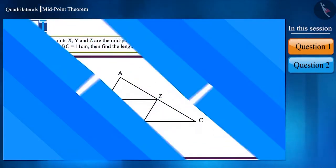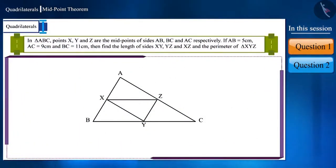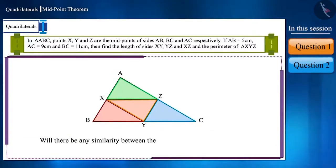Friends, look at the figure carefully. Here, in triangle ABC, four triangles are being formed. What can we tell about these triangles and their perimeter? Think about this question together with your friends. You can also take help from your teacher.